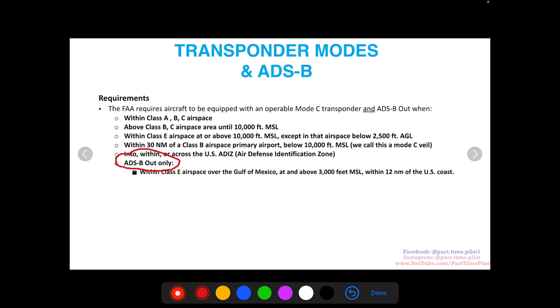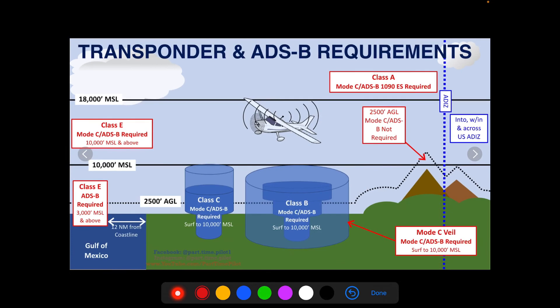Within Class E airspace over the Gulf of Mexico at and above 3,000 feet MSL within 12 nautical miles of the US coast. So 12 nautical miles from the coast above the Gulf of Mexico, 3,000 feet or above, then we would require ADS-B.